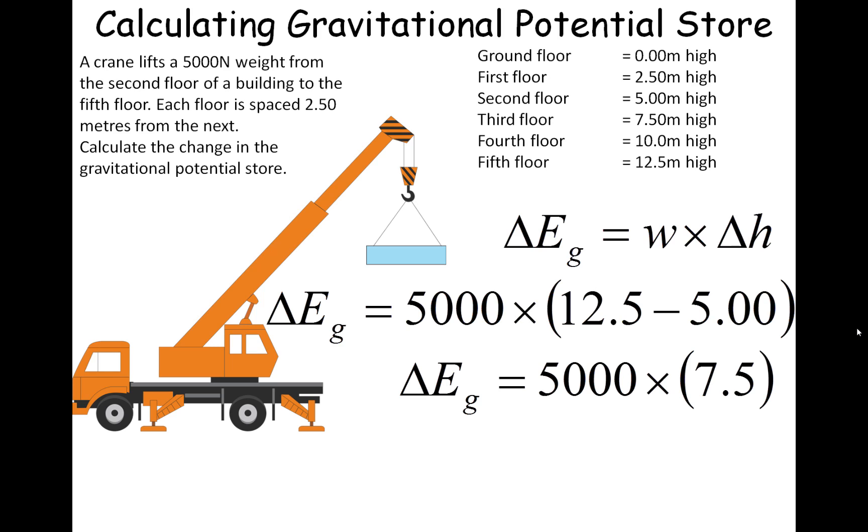So we now have delta EG equals 5,000 times 7.5 meters. So our change in the gravitational potential store is 37,500 joules.